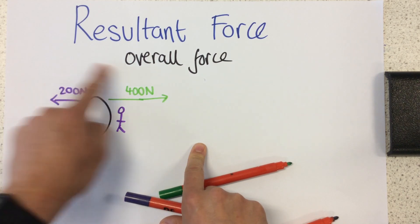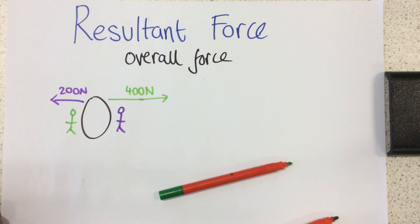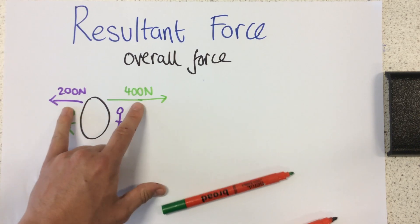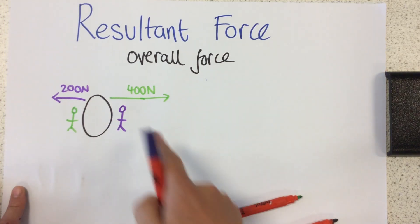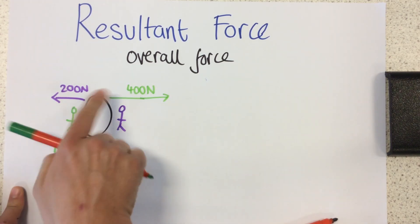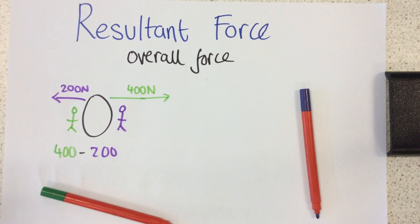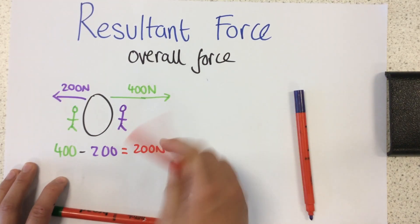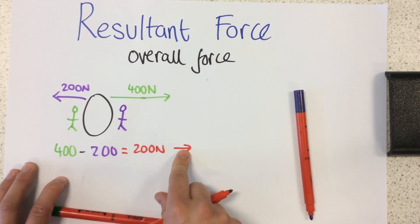So what is the overall force going to act on this object if we've got two different forces acting in opposite directions? Well, this object is going to move this way because the forces aren't balanced, and it's going to be an overall force of 200 newtons. How did I get that? Well, it's 400 newtons this way, but then I need to subtract 200 newtons which was the other way, so this gives us a resultant force of 200 newtons in that direction. Notice how my resultant force has a direction.